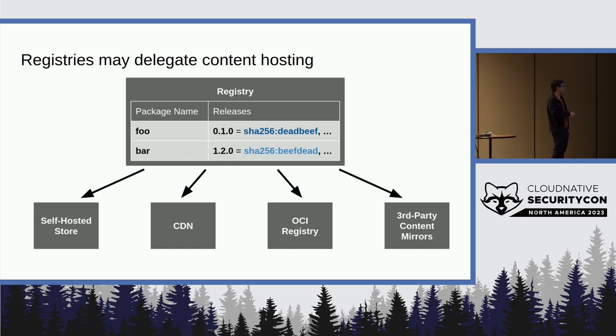While you can actually store the content in a self-hosted location that's with the registry, you could also defer to a CDN using existing OCI registry or any sort of third-party content mirror to deliver the content. And since you already know what hash you're expecting, you can validate that you got the right thing no matter where you chose to try to get it from.